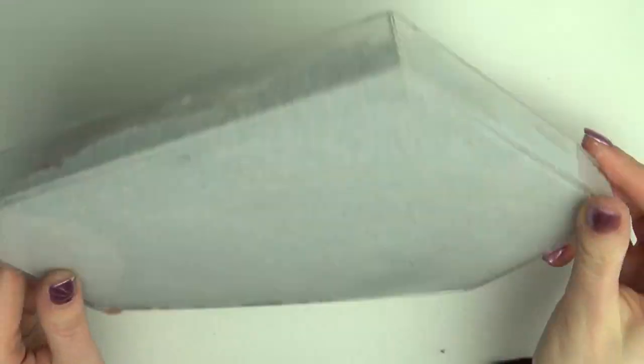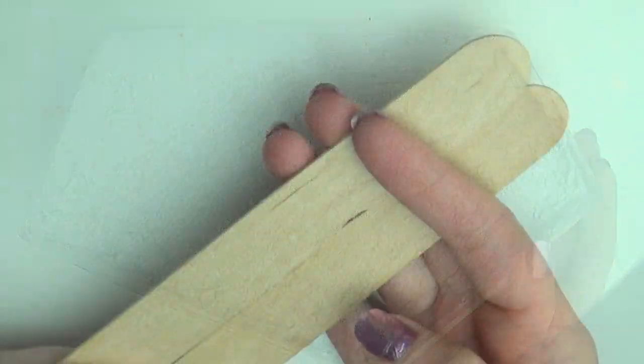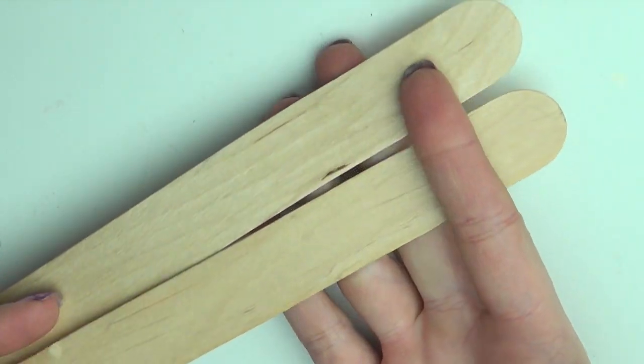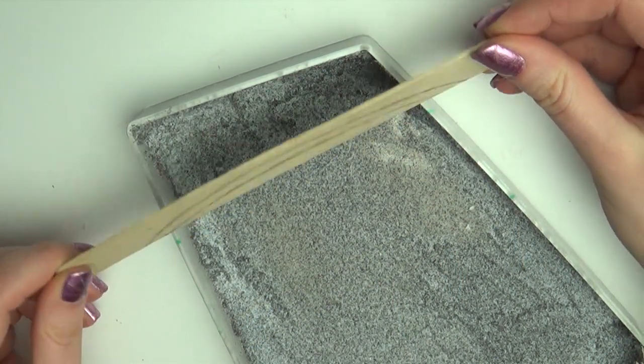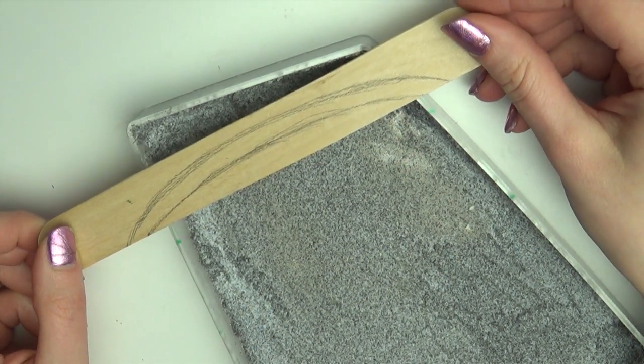Now we're gonna let the base dry and start working on the small bridge. First you're gonna need some big or wide popsicle sticks. Figure out where you want the bridge to cross the pond and sketch out like so. You're gonna need two of these.